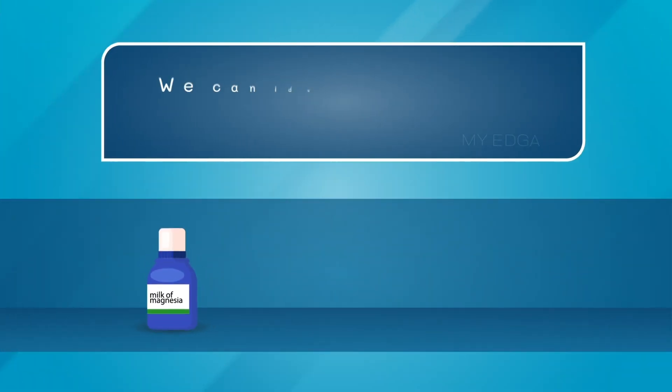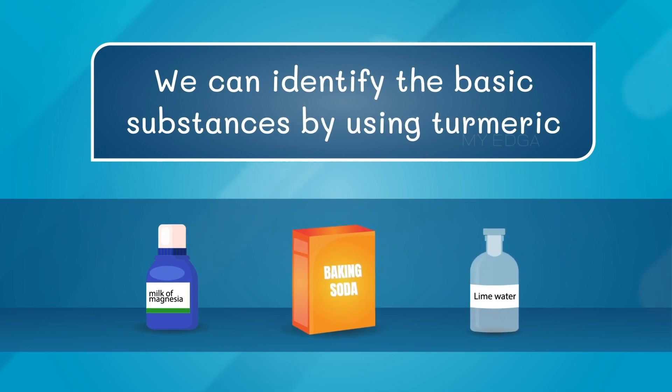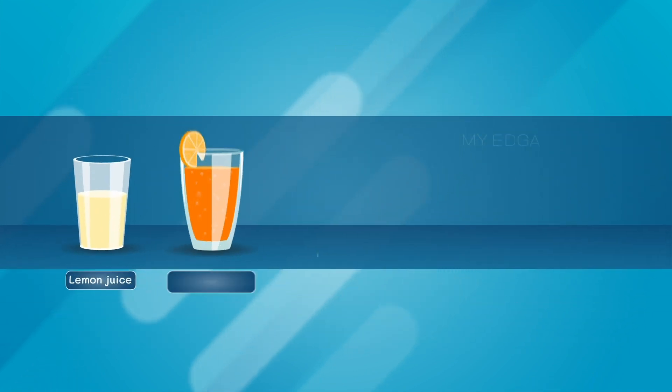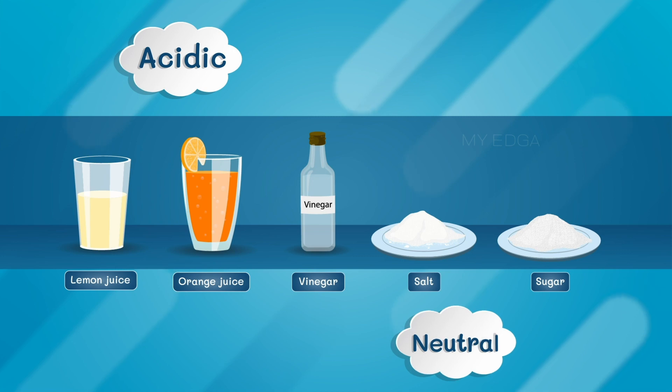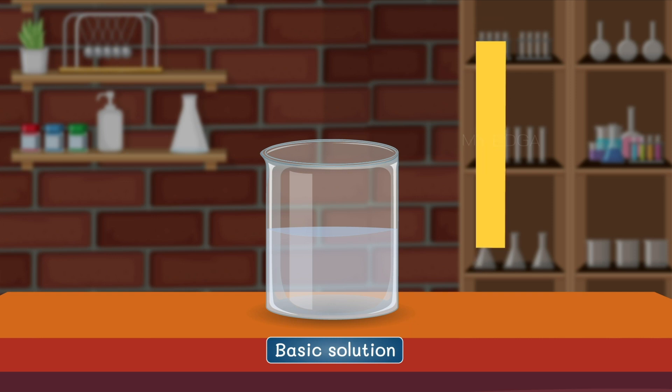So by using turmeric we can identify the basic solution, but how can we know that the remaining solutions are acidic or neutral? Do you have any idea for that? We can use the used turmeric papers that have their color changed.